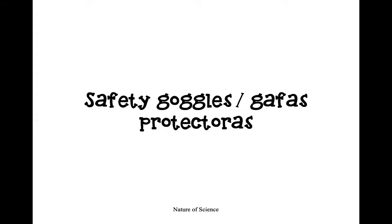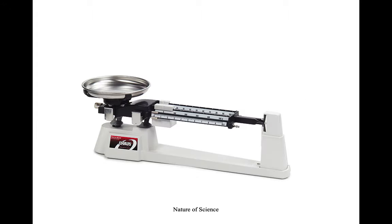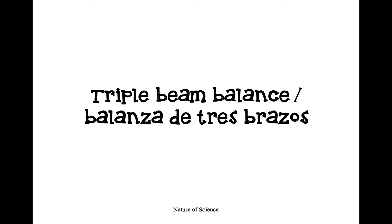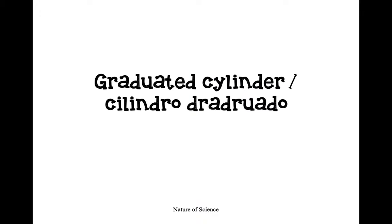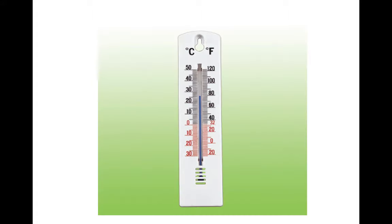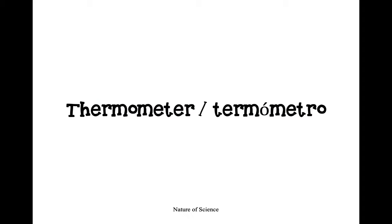Nice job — they're safety goggles. Next one: it is a triple beam balance. Next: it is a graduated cylinder. And the last one: it is a thermometer. That is all I have for today's lesson, everyone. I hope you had a great time and I will talk to you later. Bye-bye!